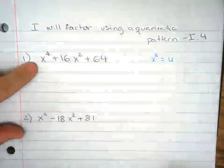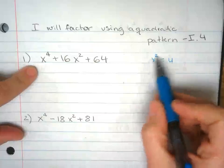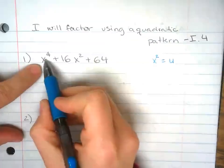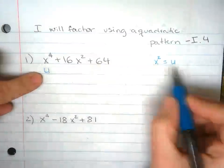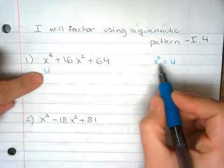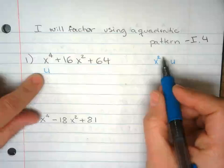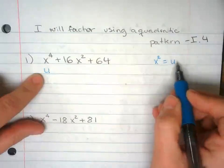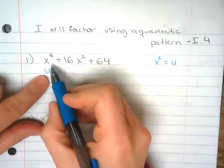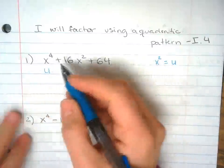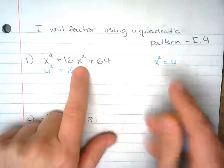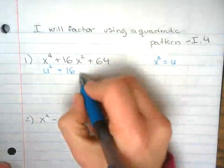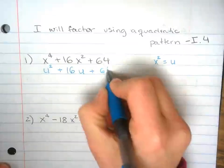With that being said, if u represents x squared, instead of writing x to the fourth power, I can replace with u. And if u is the same thing as x squared, if I do u squared, u squared is the same thing as x to the fourth power. So u squared plus 16, I'm going to replace x squared with u, u plus 64.